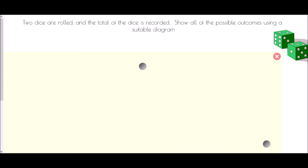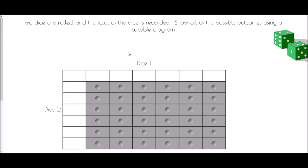The usual starting point would be with some dice. So if two dice are rolled and the total of the dice is recorded, show all of the possible outcomes using a suitable diagram. A sample space is the suitable diagram here and it looks just like a table. We have the two different dice and we want to first start off with the different results we could get on each of them. Obviously we could get a 1, 2, 3, 4, 5 or 6 on the first dice, so we need six columns, but we also could get the same results on the second dice, so we need six rows as well.